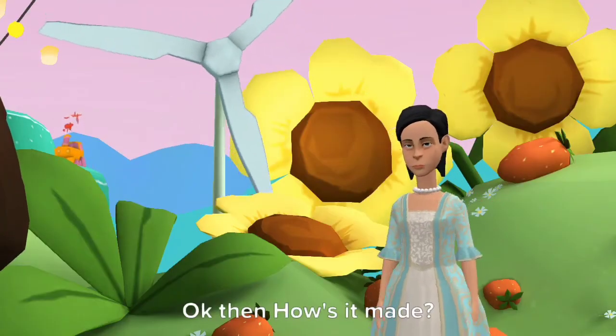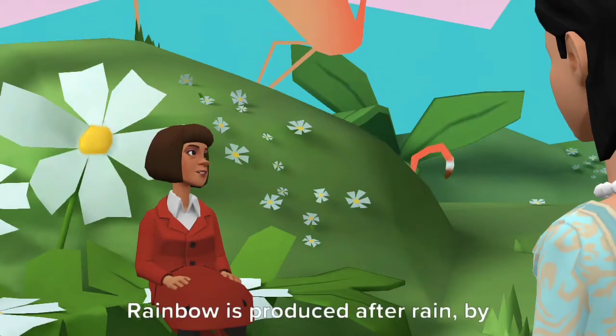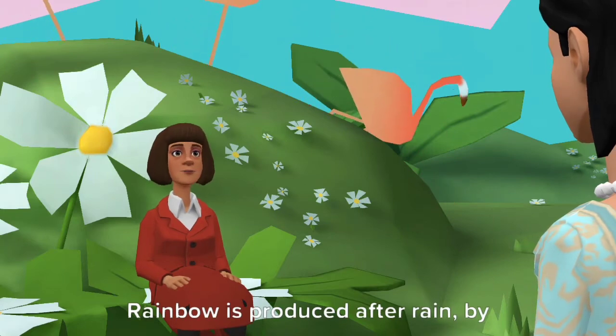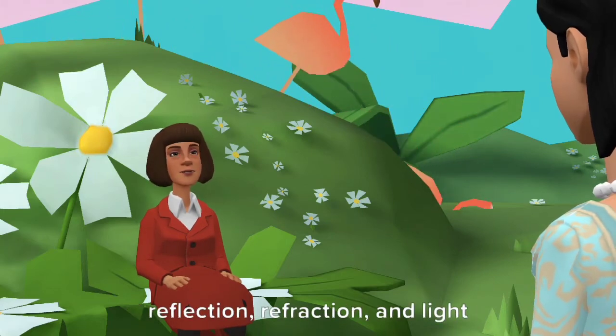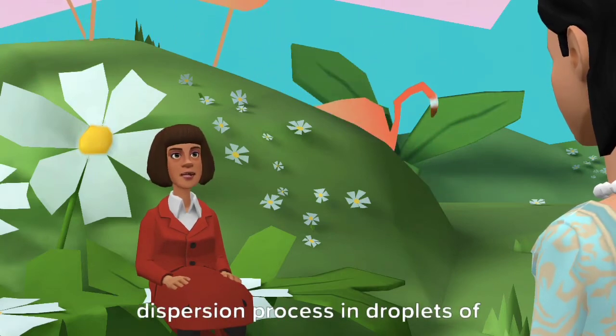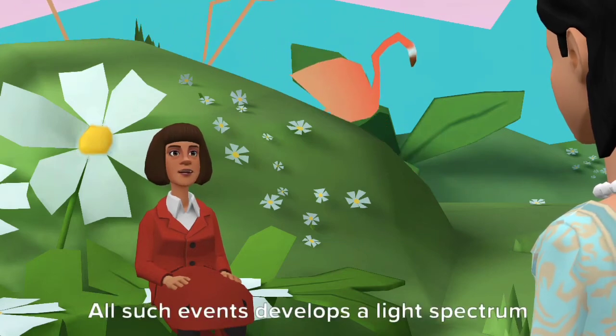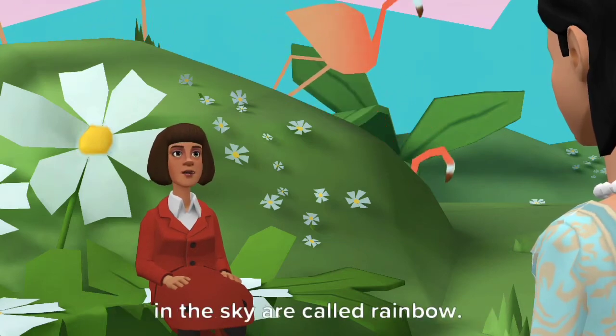Okay then, how's it made? In short, rainbow is produced after rain by reflection, refraction, and light dispersion process in droplets of water. All such events develop a light spectrum in the sky called rainbow.